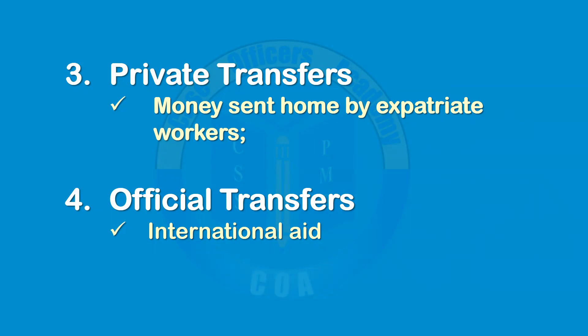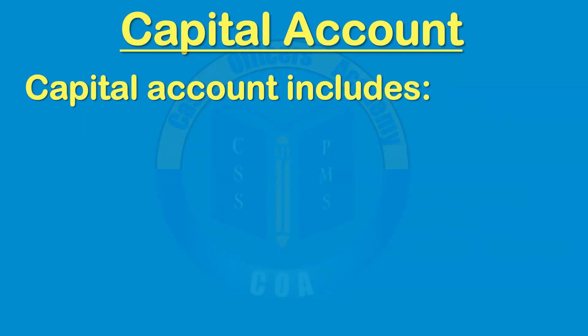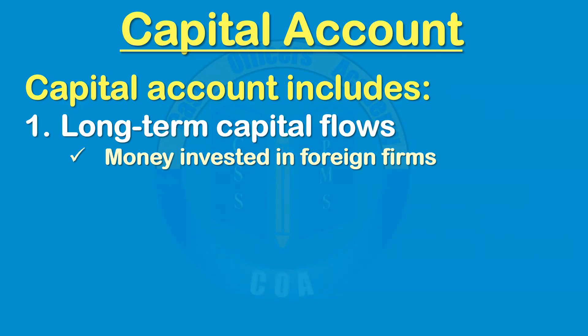The other part of Balance of Payments is the capital account, which includes long-term capital flows — essentially money invested in foreign firms. For example, Suzuki, a Japanese company, if it establishes a plant in another country, in the long run that plant will generate profits. The receiving country benefits from an inflow of foreign exchange at the time of investment. However, in the long run, when those firms repatriate their profits, the parent country that initially made the investment benefits.